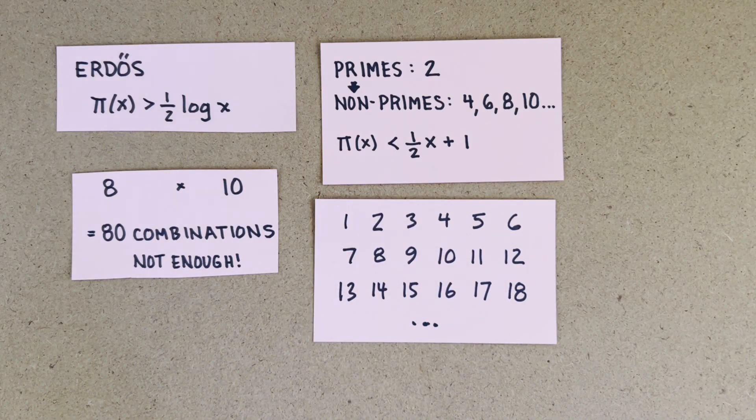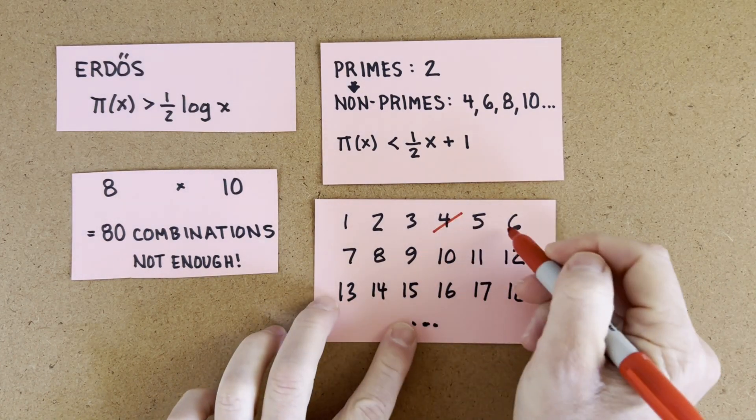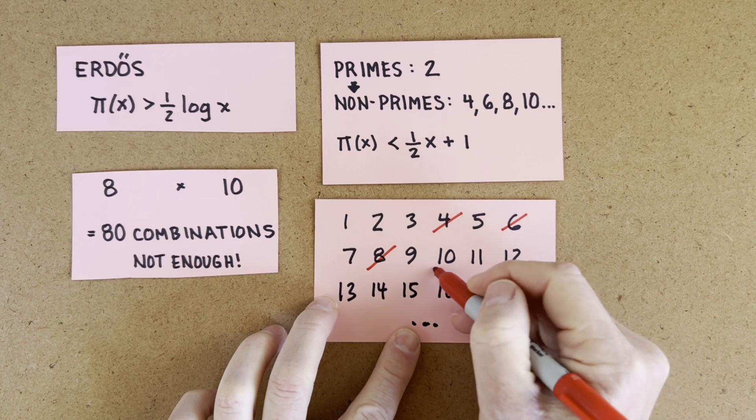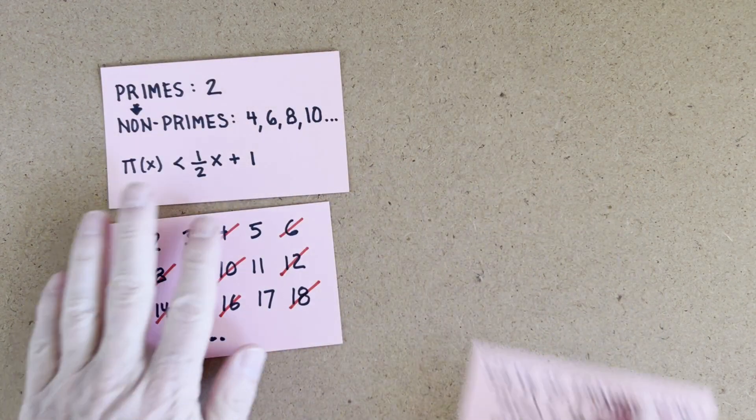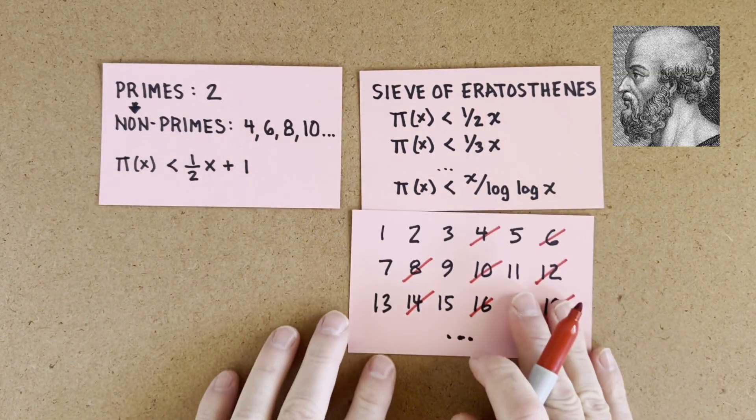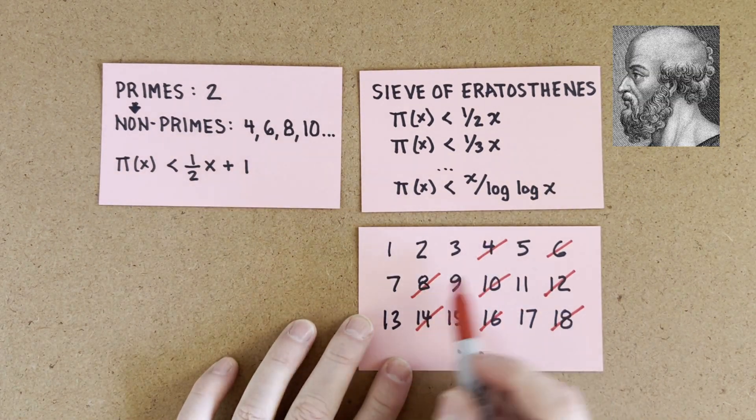That means already only half the numbers even have a chance to be prime. So π(x) is less than half of x. Actually less than half of x plus 1 because we've got to keep 2 itself in the prime mix. This is the first step in the sieve of Eratosthenes. Cross out all the multiples of 2 except 2.